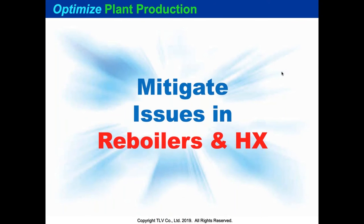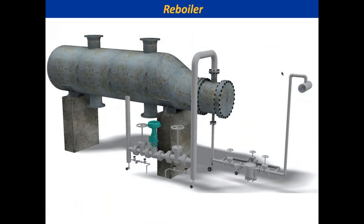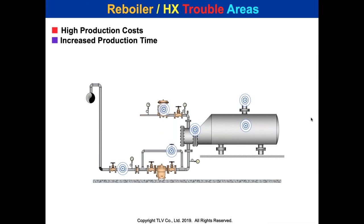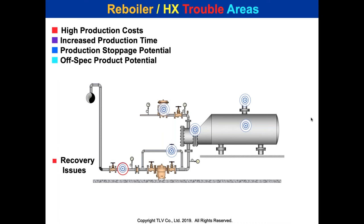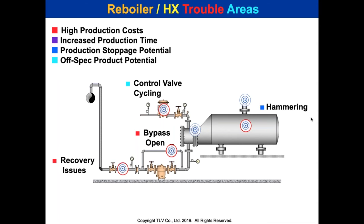Now let's look at mitigating issues in reboilers and heat exchangers. It looks simple — reboiler, control valve set, trap on the tube side steam — but we see many problems: recovery issues, bypasses opened, boiler burden increased, control valve cycling, off-spec control, hammering in the heater, channel head leaks, gasket leaks, reduced production, and bottlenecks on the system.